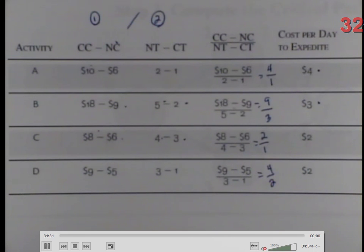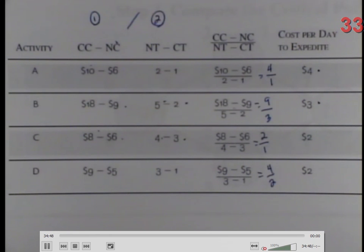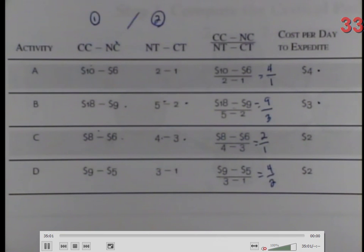We have a tie between C and D at $2,000 a day. How do we determine which one to use? Whether they're on the critical path. Our critical path is A-B-D, so we would start with D. If I reduce D, that actually reduces the critical path from 10 days to 9. If I spend $2,000, I can take it down by one day.